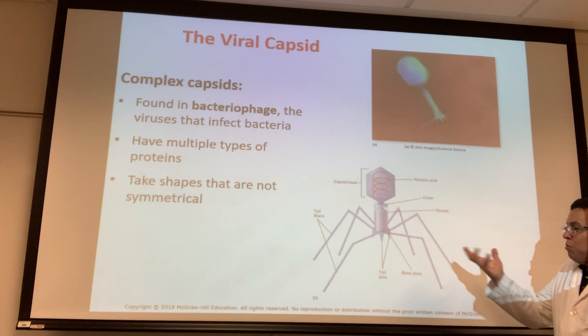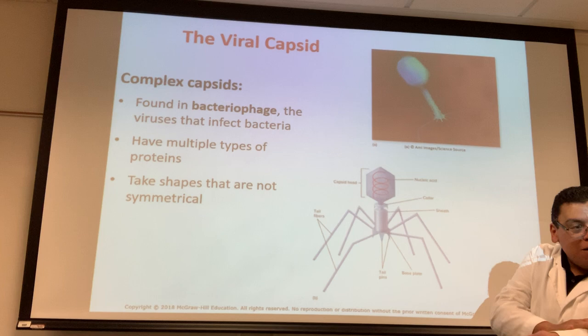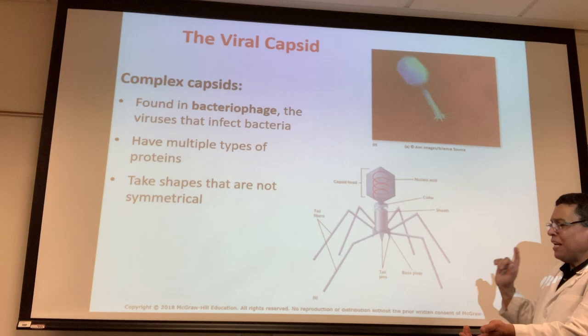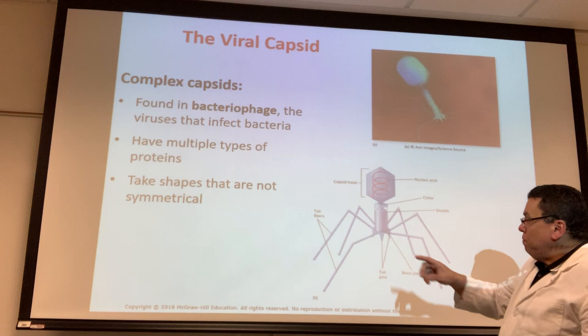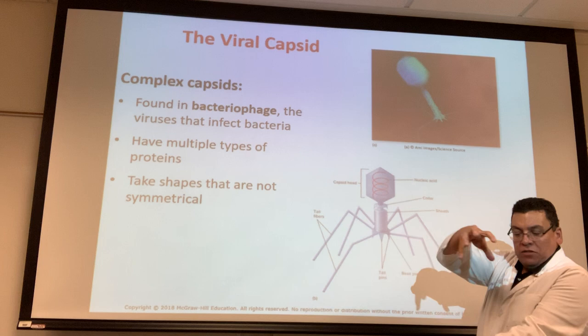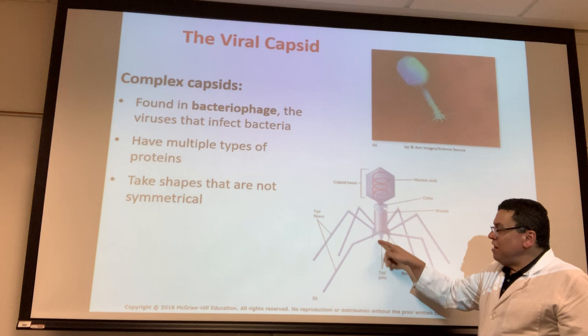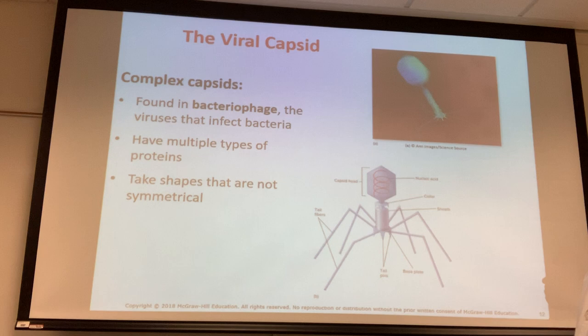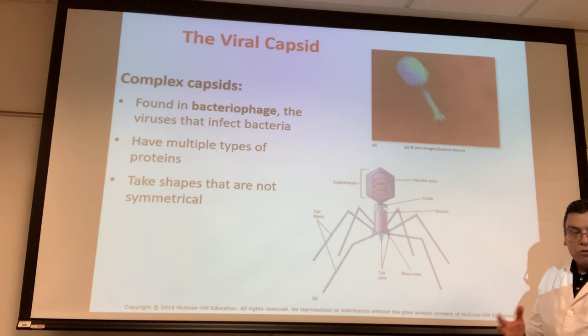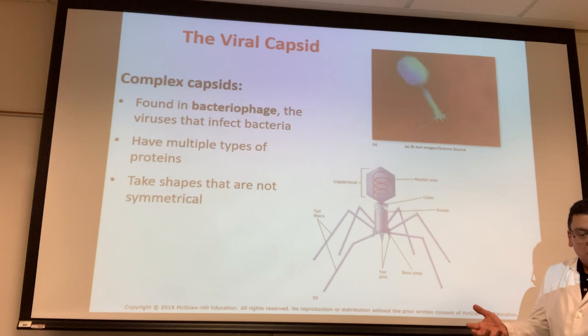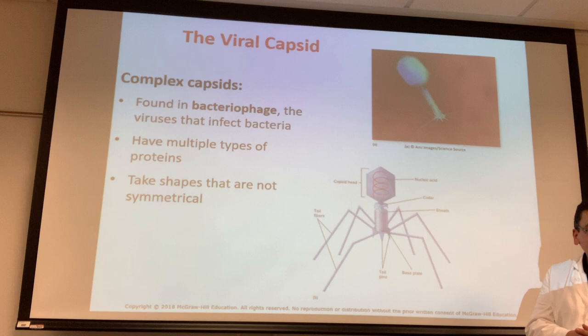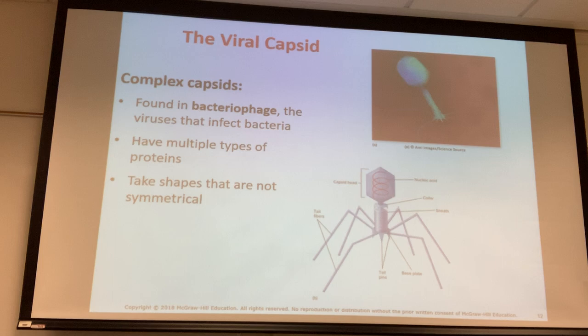It almost acts like a needle. It lands on the surface of bacteria, punctures the cell membrane with the tail pins, and injects its DNA into the bacterium. Some bacteria try to overcome this infection by producing restriction enzymes to cut the viral DNA — that's what restriction enzymes do.